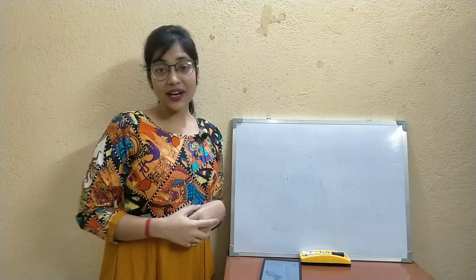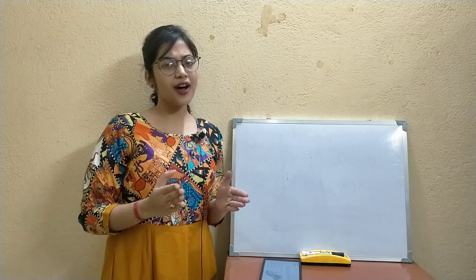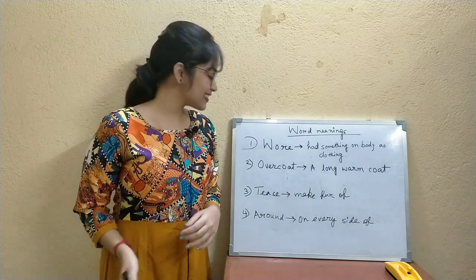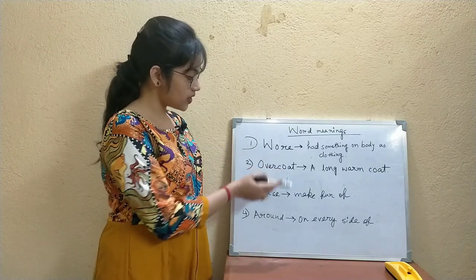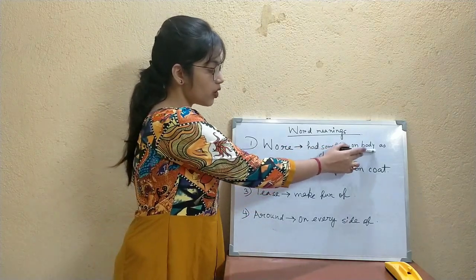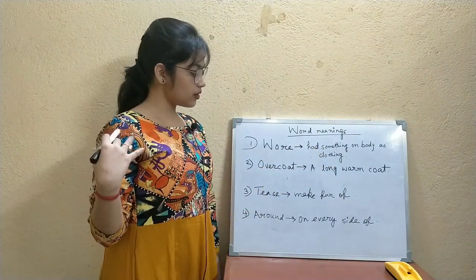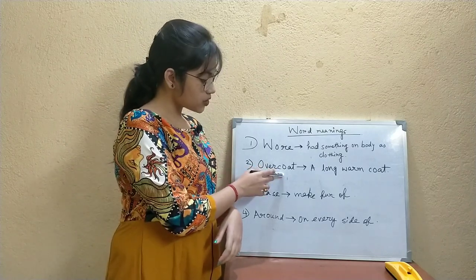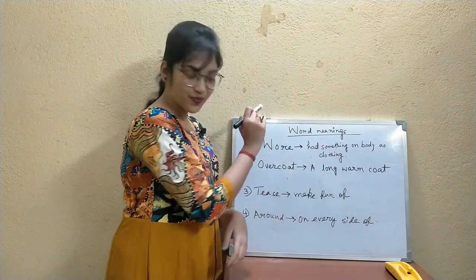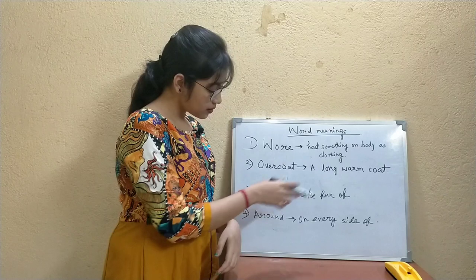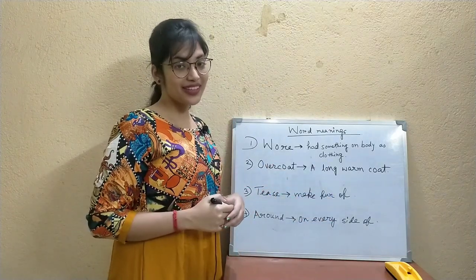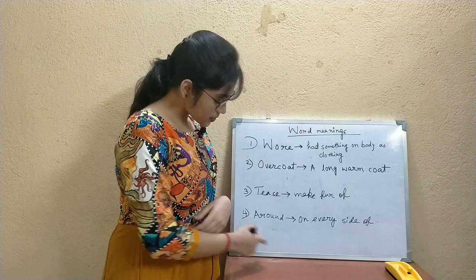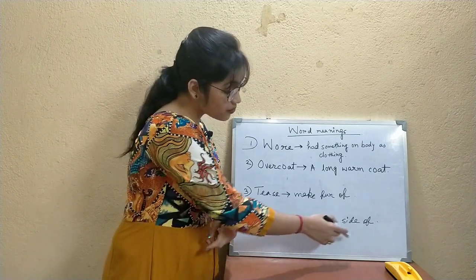Let's have a look at the word meanings. First: 'wore' means had something on the body as clothing. Second: 'overcoat' means a long warm coat. Third: 'tease' means to make fun of — we know squirrels are very fun-loving animals. Fourth: 'around' means on every side of.